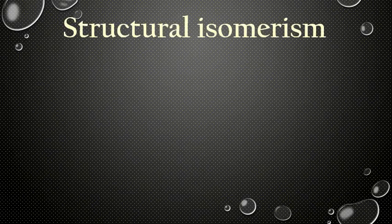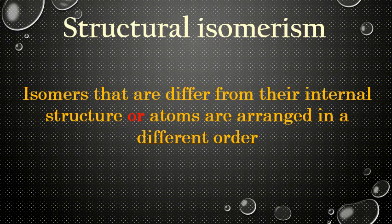Now let's see what structural isomerism is. These are isomers that differ in their internal structure — that is, atoms are arranged in a different order. Their molecular formulas are the same, but they have different internal structures. As already mentioned, there are three types of structural isomers.